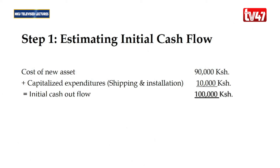We start by estimating the initial cash flow. The cost of the new asset is 90,000 and the capitalized expenditures for shipping and installation are 10,000. Therefore the initial cash outflow for the entire project is 100,000.